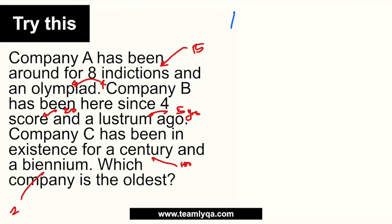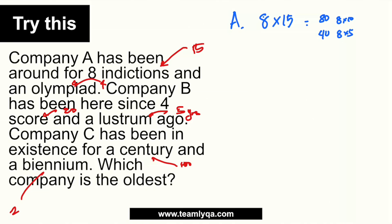Let's go to Company A. Company A is 8 indictions plus an olympiad. Indictions are 15 years, so 8 times 15 equals 120. Here's a faster technique: 8 times 10 is 80, plus half of that which is 40 (that's 8 times 5), so 80 plus 40 equals 120. And an olympiad is 4 years. So Company A has been in existence for 124 years.